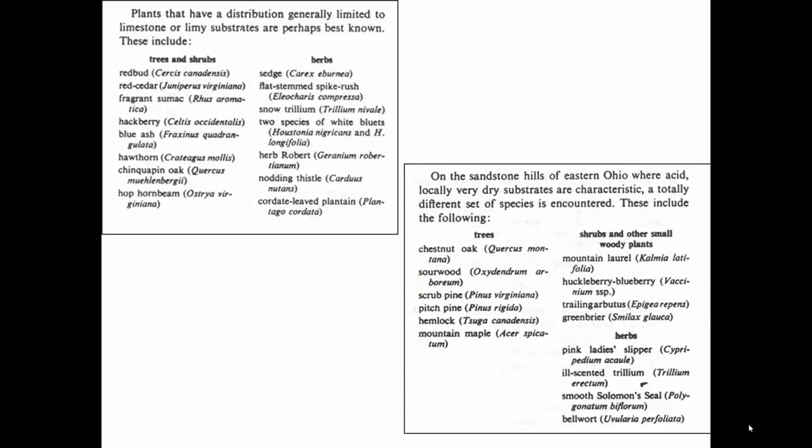There are some plants that have characteristic distributions. In limey substrates: redbud, red cedar, fragrant sumac, hackberry, blue ash, and chinkapin oak. In eastern Ohio in the sandstone areas, we have chestnut oak — which looks an awful lot like chinkapin oak — an interesting tree in the heath family called sourwood, a bunch of pines, and some interesting evergreen shrubs like mountain laurel.